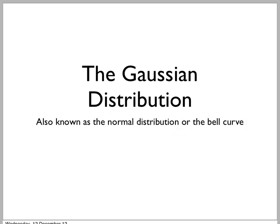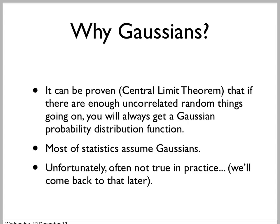What is this particular probability distribution function, and why is it so famous and widely used? Well, the answer comes from the central limit theorem. This is a mathematical theorem that says, to paraphrase: if you get enough random stuff going on, you get a Gaussian.